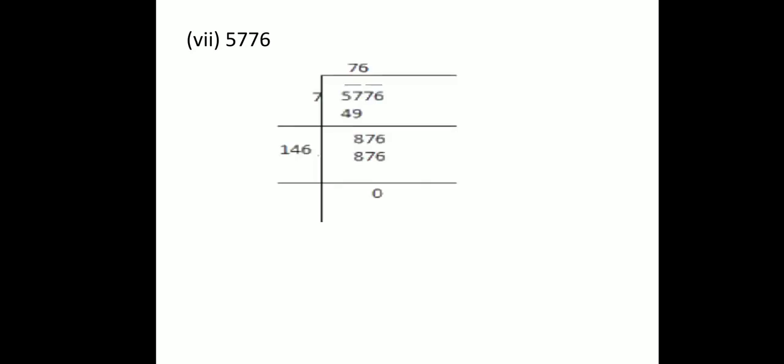Coming to the 7th part: 5,776. Place the bars over every pair of digits starting from the units digit — 76 under one bar, 57 under another bar. Find the greatest number whose square is less than or equal to 57: 7 into 7 is 49. Subtracting 49 from 57 gives 8. Bring down 76; new dividend is 876. Double of 7 is 14. We need 146 multiplied by 6 to get 876, remainder 0. So, the square root of 5,776 is 76.